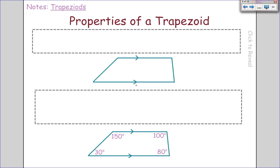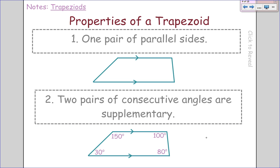Now properties of a trapezoid. There are two of them for just normal trapezoids. First, you have one pair of parallel sides. This is what you should be writing on your notes. Secondly, we have two pairs of consecutive angles that are supplementary. In other words, 30 and 150, that's a pair of consecutive supplementary angles.